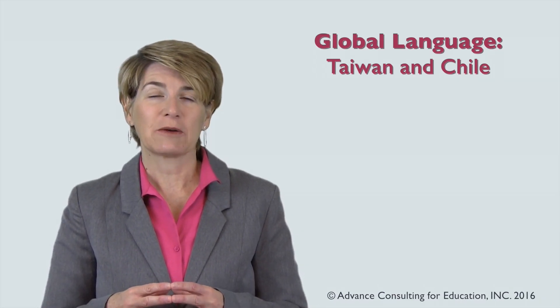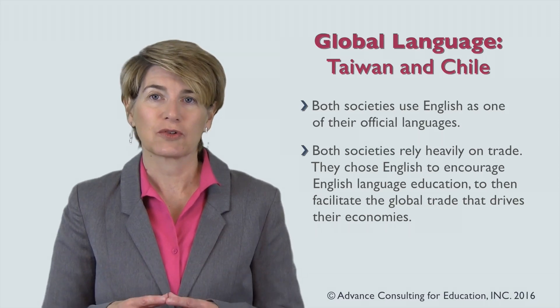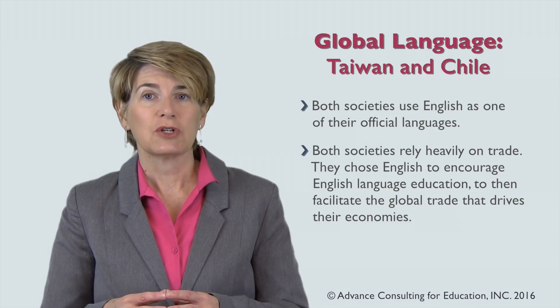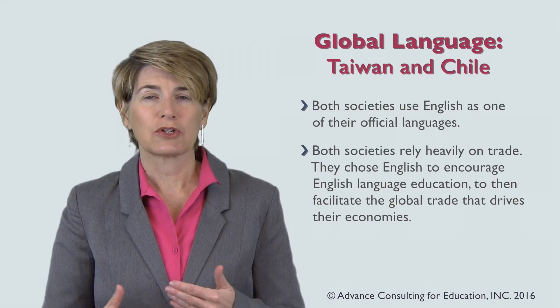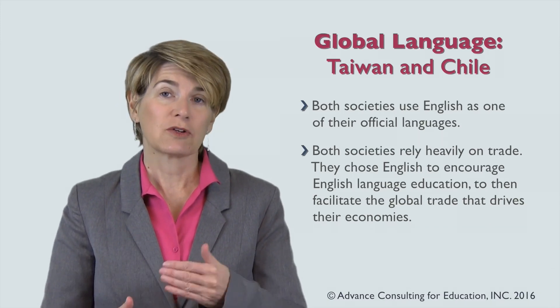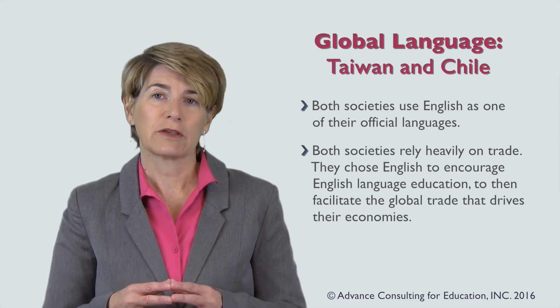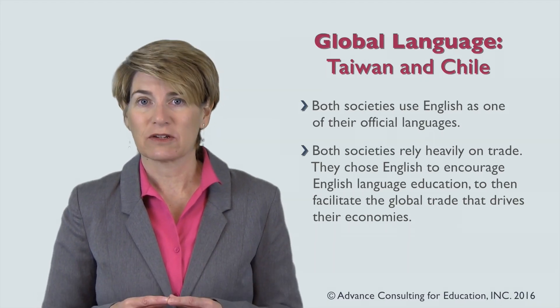Taiwan and Chile are examples of societies that selected English — a global language — as one of their official languages. Both depend heavily on international trade for their economic growth, and strategically decided that having English as an official language would encourage and support its learning, facilitating the global trade that drives their economies.